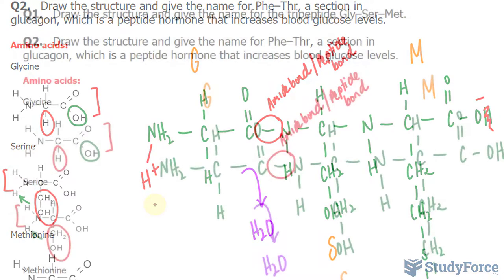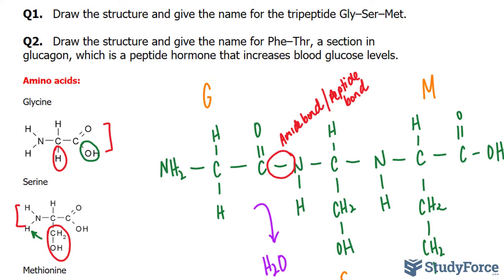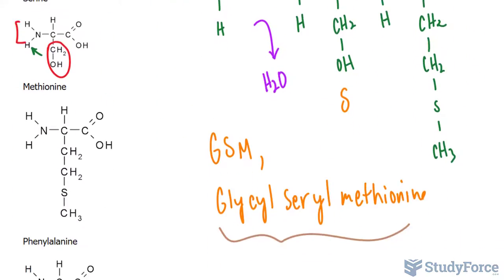Let's move on to question number two. Draw the structure and give the name of phenylalanine and threonine, a section in glucagon, that's a peptide hormone released by the pancreas to convert glycogen in the liver into glucose. We're going to be doing the same thing again. We have phenylalanine and threonine.